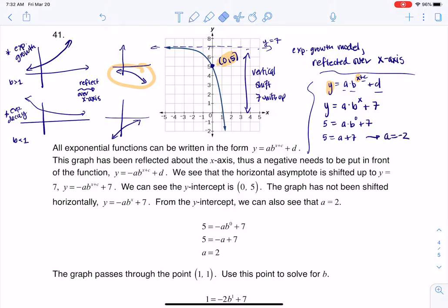So to summarize where we are with our equation, so far I'm at y is equal to negative two times b to the x plus seven.